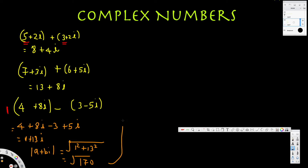We cannot simplify square root of 170 further. We can express it as square root of 17 times 10, but 170 has no perfect square factors. For example, if we had 25 as a factor we could simplify, but since 170 has no perfect square multiplication, we just leave it as square root of 170.